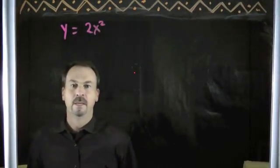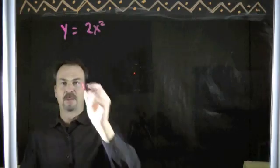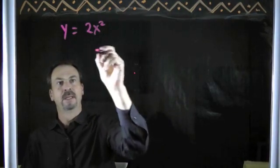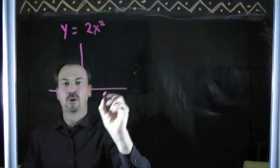y equals 2x squared. And if you draw a series of tables for this and go through the text that accompanies this video, plots and points, you'll find, again, a symmetrical u-shaped graph.